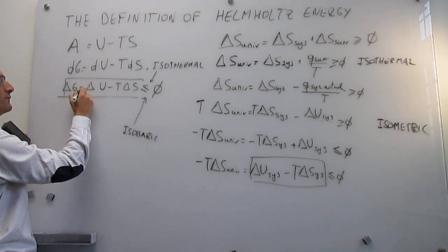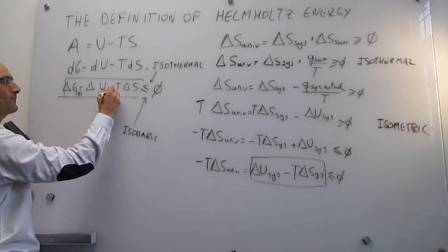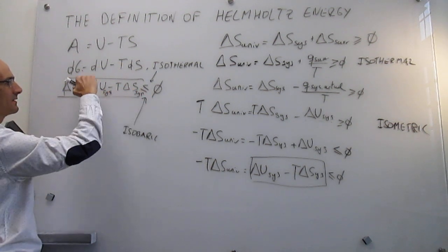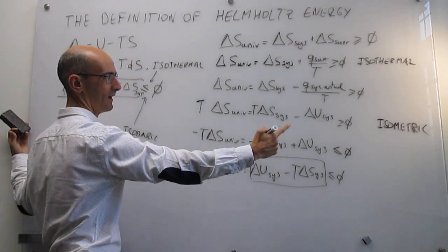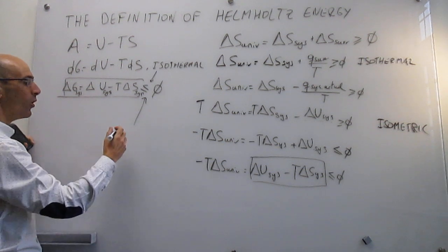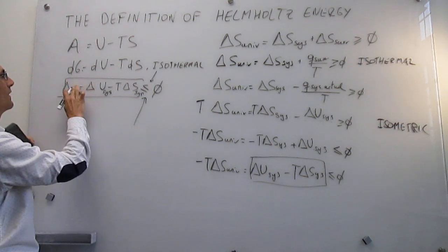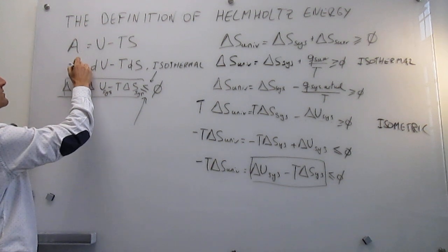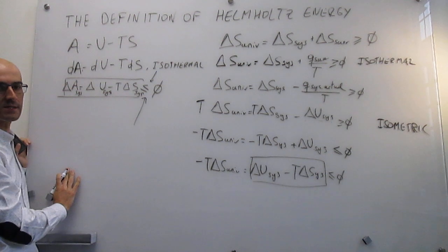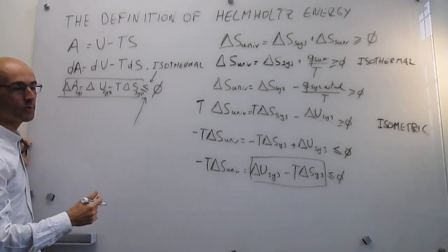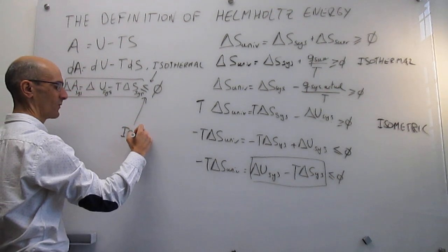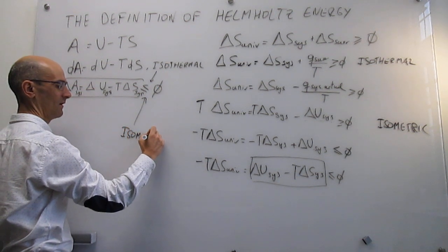Notice that all of this is for the system — the same thing applies as with the Gibbs energy. What you have in this expression is exactly the same as the second law under isothermal and isometric conditions. That means you can only use the Helmholtz energy as a criterion for spontaneity or equilibrium if you are working under constant temperature and constant volume, which I am writing here as isometric or isochoric.